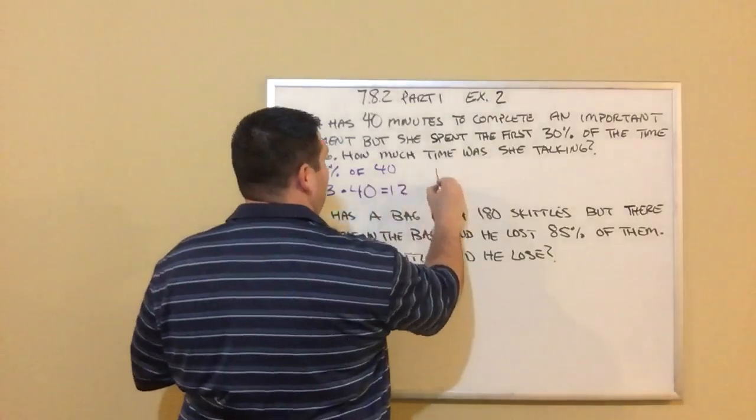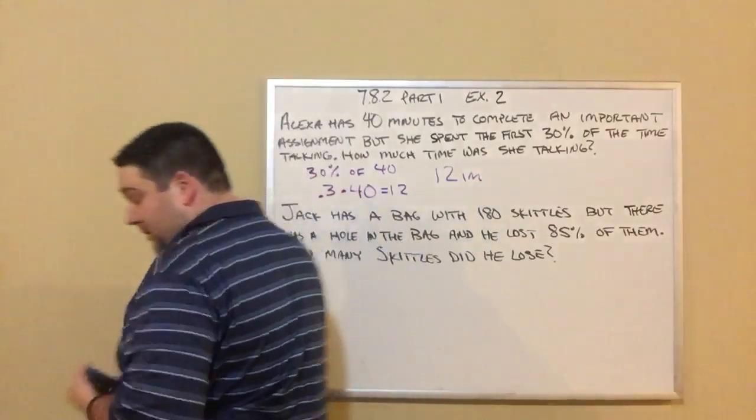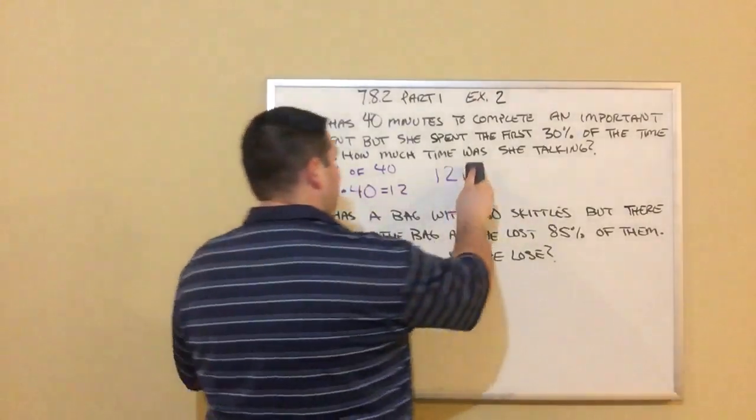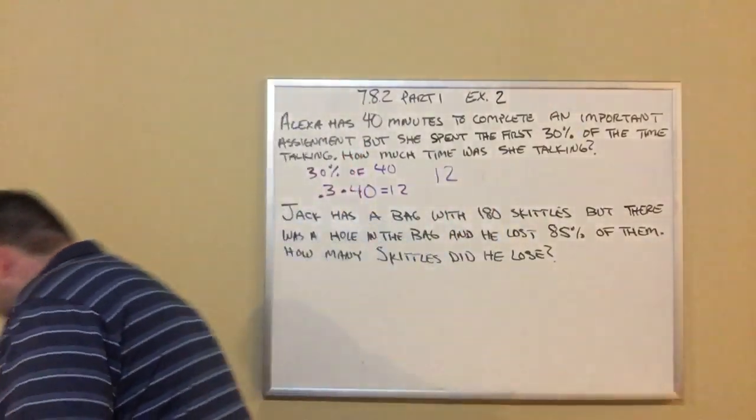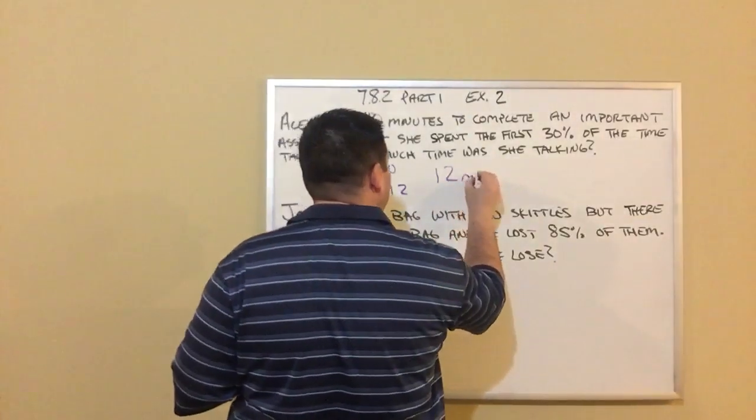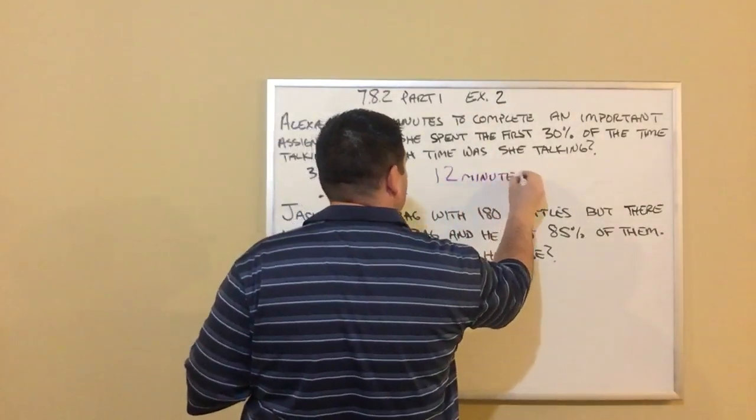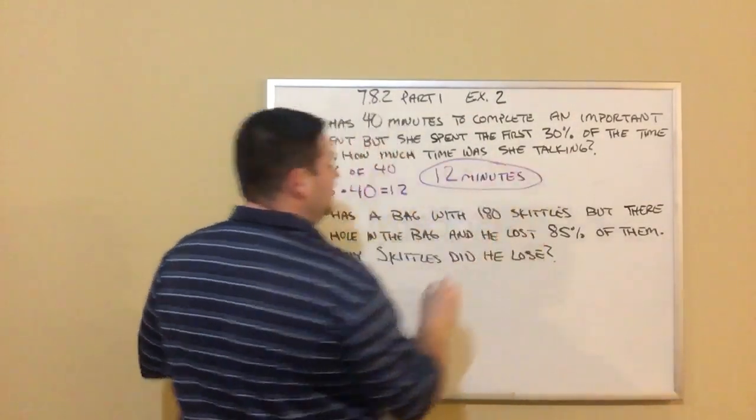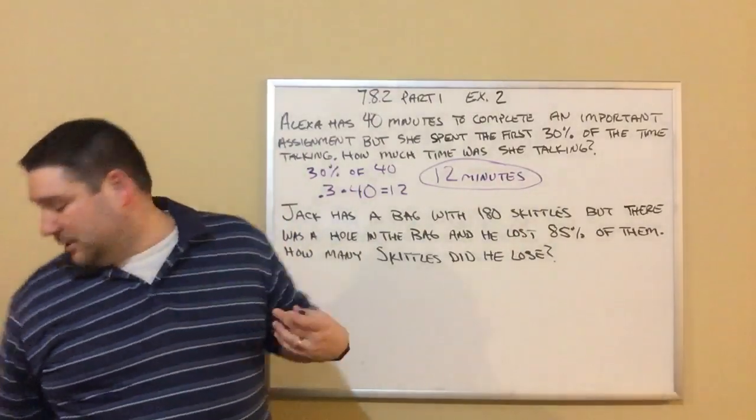So we figure out that that's 12. And remember, this is a word problem, so we need a label. If I could spell, that would be helpful. How about we go with minutes? So 12 minutes. So she was talking for 12 minutes. Let's look at the second one.